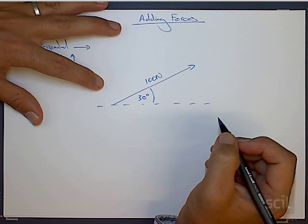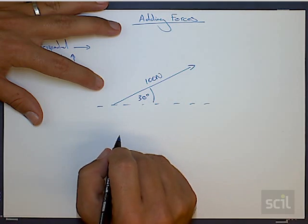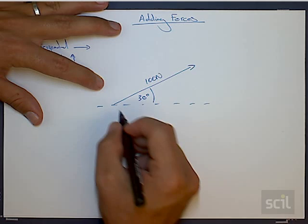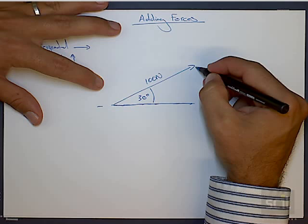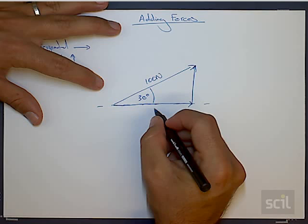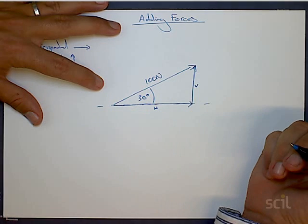Now if we want to, we can break this force up, instead of being an ugly force at an angle of 30 degrees, into two forces. The first force is a horizontal force, and the second force is a vertical force. And this is what's called the horizontal component and the vertical component of that force.